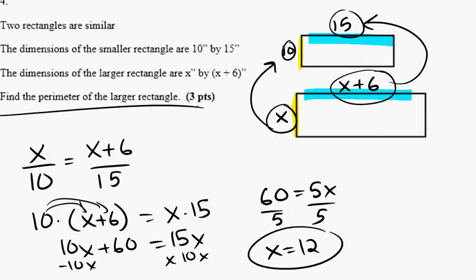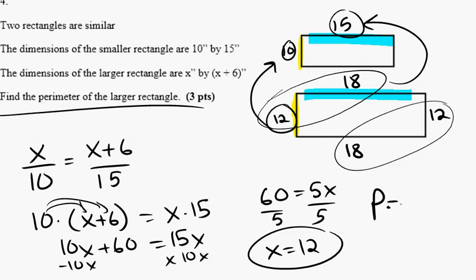If we want to find the perimeter of the larger rectangle, and we know that this is 12, this is x plus 6, so this has to be 18. The rectangle opposite sides are congruent. So we have 12 plus 18 plus 12 plus 18. If we combine these two, we know that 12 plus 18 is 30. So here's another 30. So the perimeter of the larger rectangle must be 60.